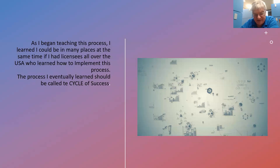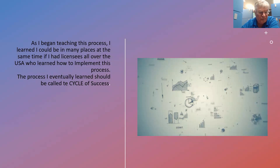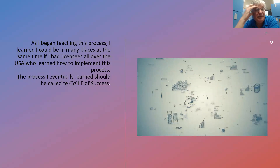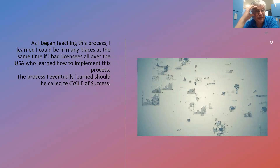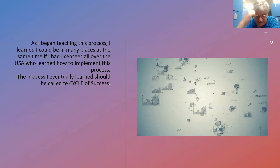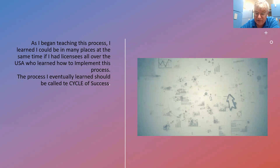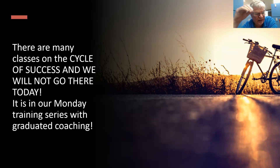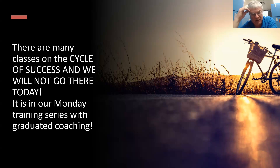I started out slow many years ago and gradually saw the relationship of the results of establishing a properly designed estate plan, the funding process, and life events that turn into the future sale — I usually call that the sweet spot. As I began teaching this process, I learned I could be in many places at once if I had licensees all over the United States. The process I eventually learned should be called the cycle of success. It's the ones who use it that are growing the fastest.